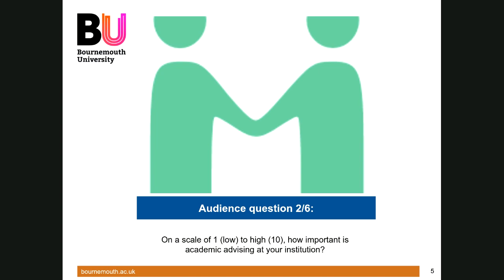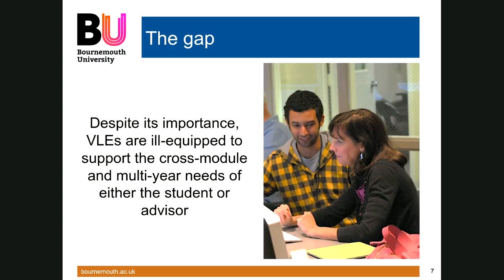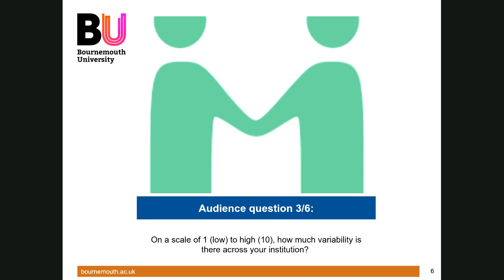Some of these high or low scores are reflecting the nuances of what it's actually like when we're trying to do it — there's certainly a difference between policy and practice sometimes. Question three: on a scale from low to high variability, how much difference is there between different schools or faculties in how academic advising is done? From my experience, there's quite a bit of variability — we do have a policy, but there's freedom about how individual academics enact it.